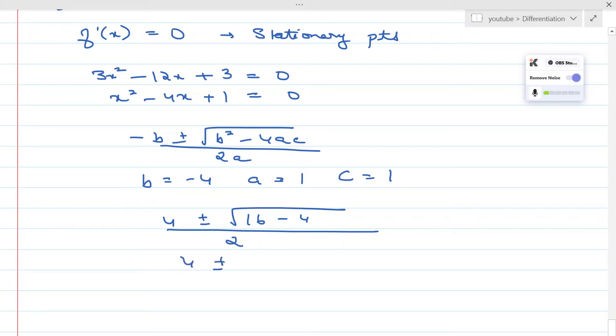We're getting 4 ± √12 / 2. 12 can be written as 4×3, which would be 2√3. So we're getting (4 ± 2√3) / 2, which is 2 ± √3.